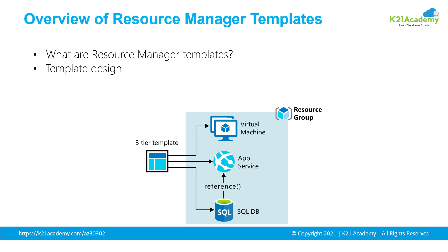You can think of declarative automation as something similar to how web browsers display HTML files. An HTML file describes what elements appear on the page but doesn't describe how to display them — that's the browser's responsibility. Similarly, we just tell the system: I need a virtual machine, I need a public IP, I need an app service, I need a SQL DB. I write everything in a file and it's the responsibility of the Azure Resource Manager to deploy it. We are not concerned about how — we just have a list of what resources we need.